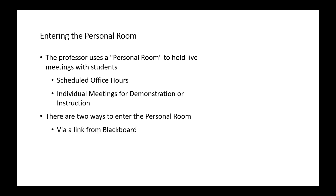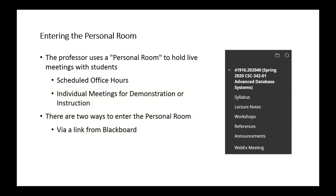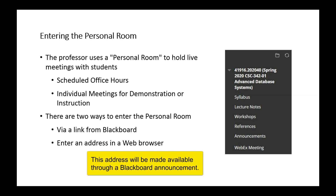There are two ways to enter the personal room. One is via a link from Blackboard. I've extended the content of my Blackboard courses to include a link entitled WebEx meeting. I've also added another link called announcements, where I'll post announcements that will also be available for students to review when they log into Blackboard. Alternatively, because we're doing this through a web interface, you can enter an address into a web browser without going to Blackboard. I'll provide this address through an announcement in Blackboard.